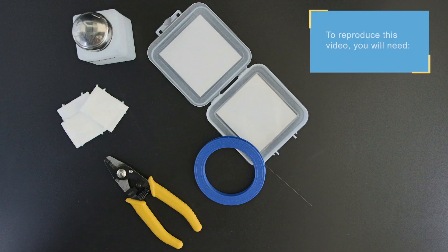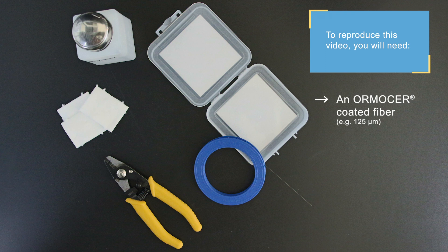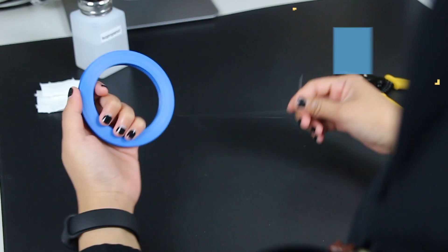To reproduce this video, you will need an FBGS Ormiser coated fiber, a standard telecom stripper, alcohol and delicate task wipers, and a fiber hack.